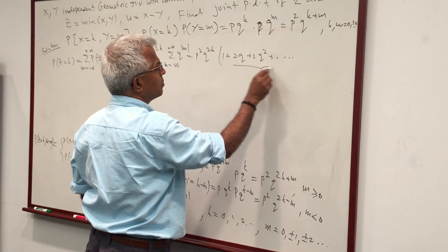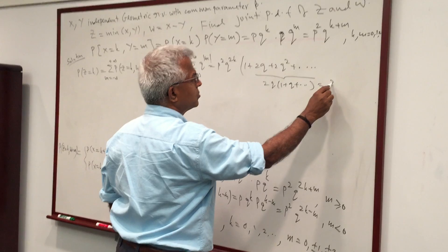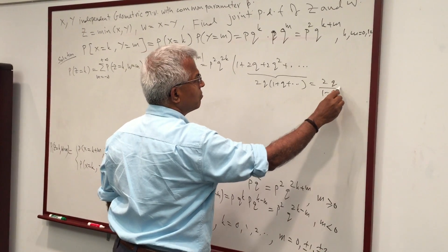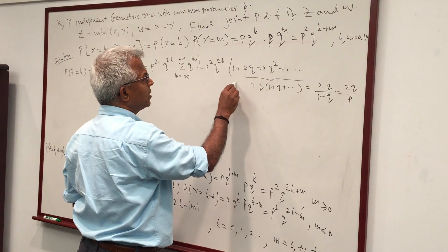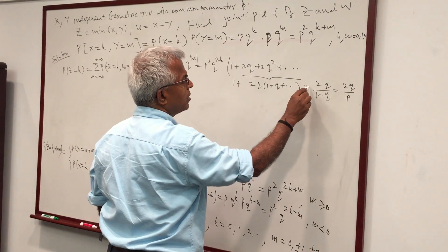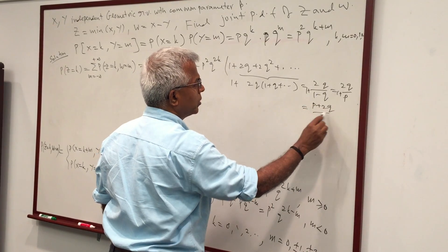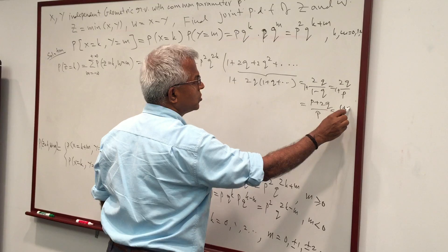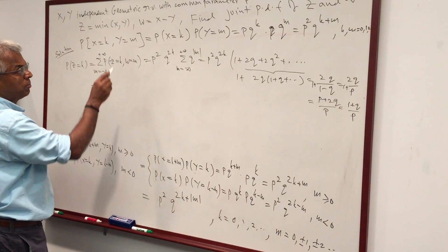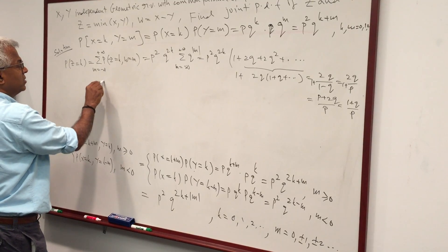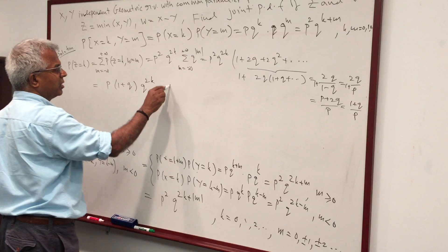That sum equals 1 + 2Q + 2Q² + ... = 1 + 2Q(1 + Q + ...) = 1 + 2Q/(1−Q) = 1 + 2Q/P = (P + 2Q)/P = (1 + Q)/P. Multiplying by P² · Q^(2K), and canceling one P, we get the marginal: P(Z=K) = P(1+Q) · Q^(2K) for K = 0, 1, 2, 3, ...